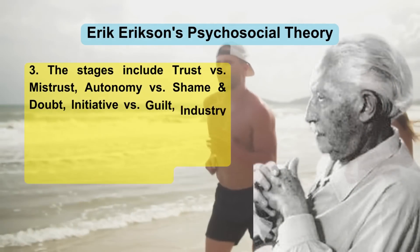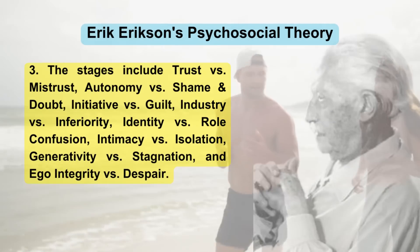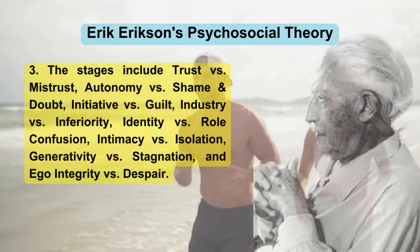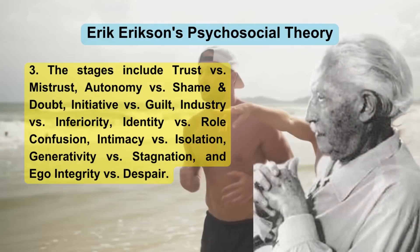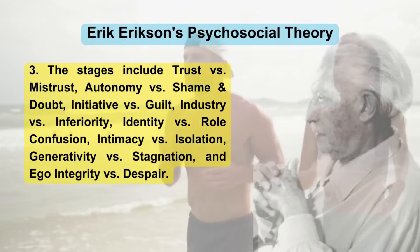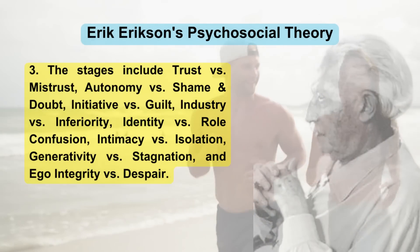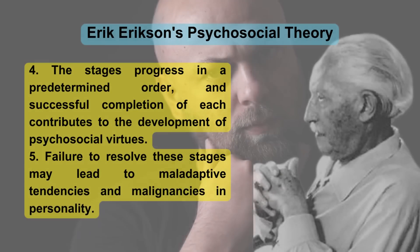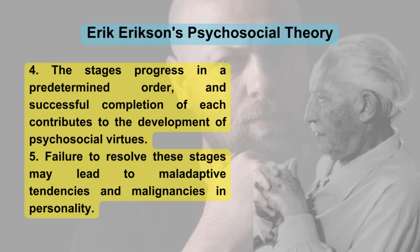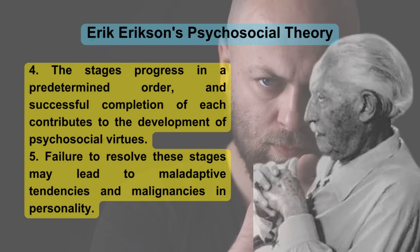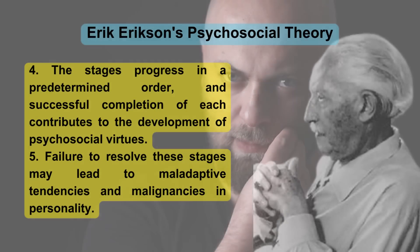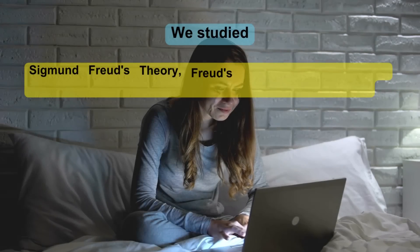The eight stages include: trust vs. mistrust, autonomy vs. shame and doubt, initiative vs. guilt, industry vs. inferiority, identity vs. role confusion, intimacy vs. isolation, generativity vs. stagnation, and ego-integrity vs. despair. The stages progress in a predetermined order, and successful completion of each contributes to the development of psychosocial virtues. Failure to resolve these stages may lead to maladaptive tendencies and malignancies in personality.